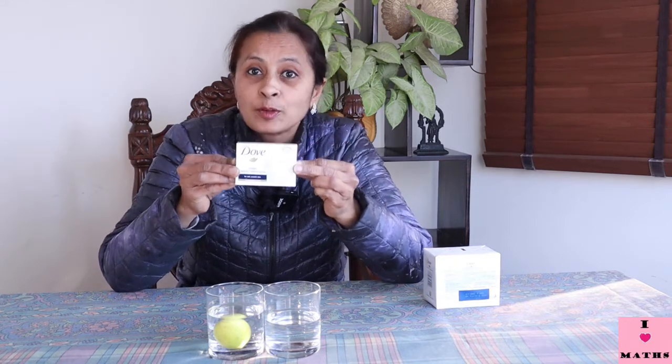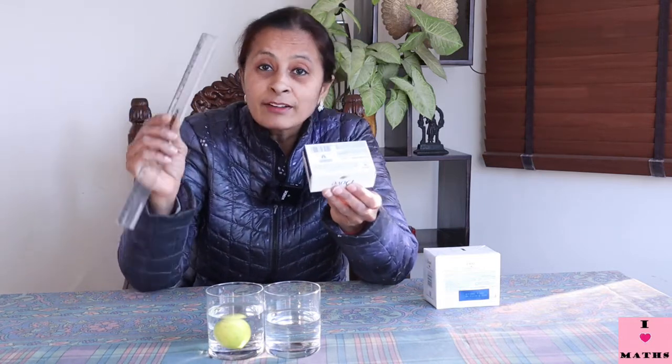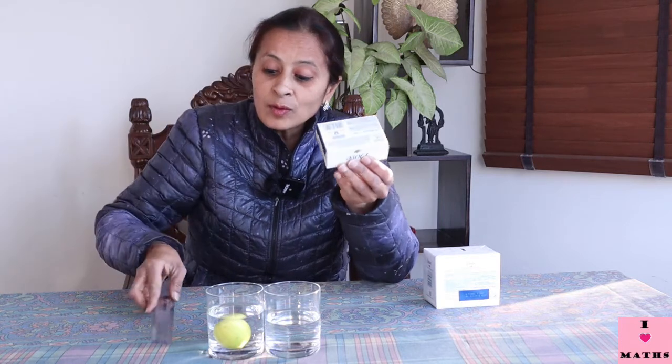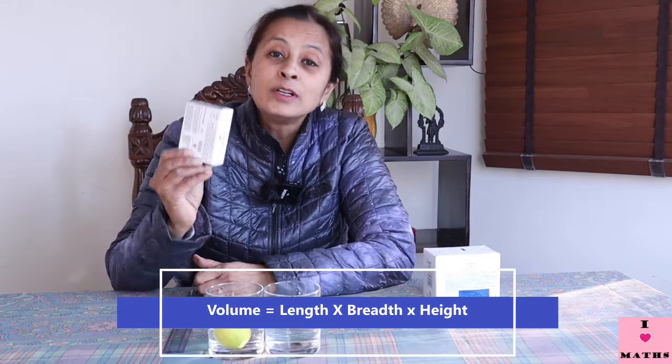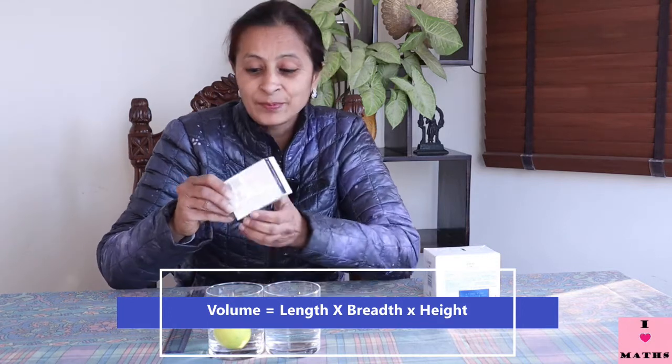We can calculate the volume of this cuboid by measuring its length, breadth, and height with the help of a scale. It has length, breadth, and height — we can measure these three dimensions and then multiply them. So, the volume of a cuboid is equal to length multiplied by breadth multiplied by height.